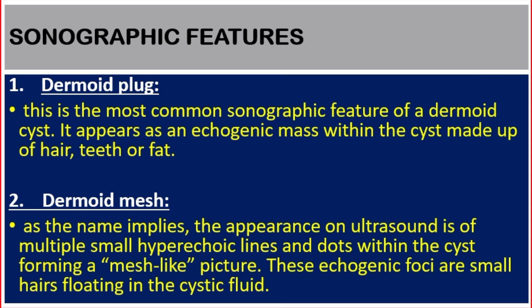Number two: dermoid mesh. As the name implies, the appearance on ultrasound is of multiple small hyperechoic lines and dots within the cyst, forming a mesh-like picture. These echogenic foci are small hairs floating in the cystic fluid.